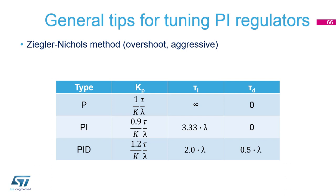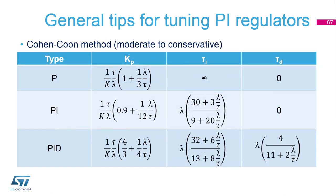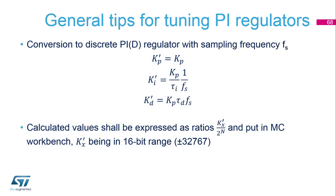This set of coefficients comes from the Ziegler-Nichols method, which is a little bit aggressive and generates overshoots. If we want a more conservative or moderate reaction and tuning of the PI regulators, we can use a different calculation of these coefficients based on the Cohen-Kuhn method. When we get the coefficients, we can calculate Kp, Ki, and possibly Kd if using PID regulators, with the equations on this page.